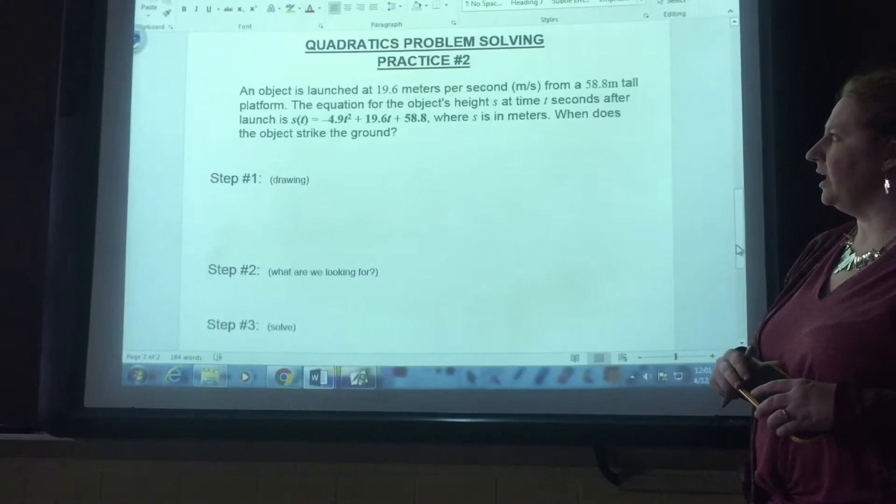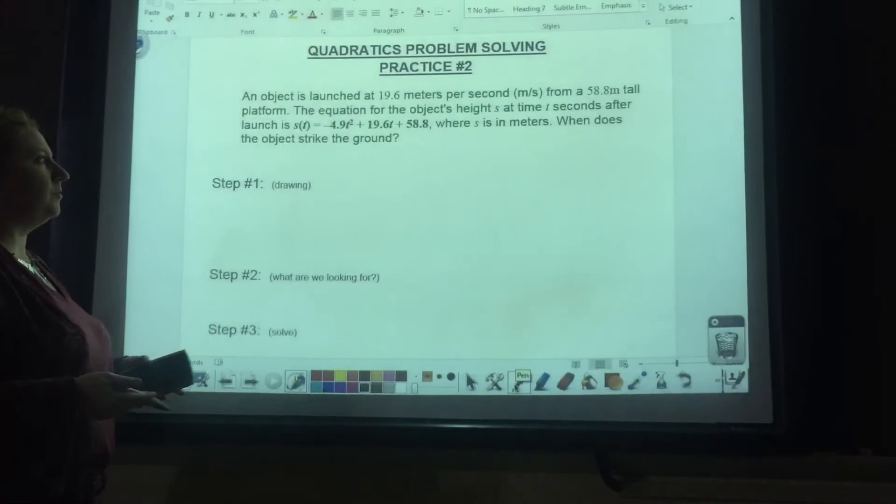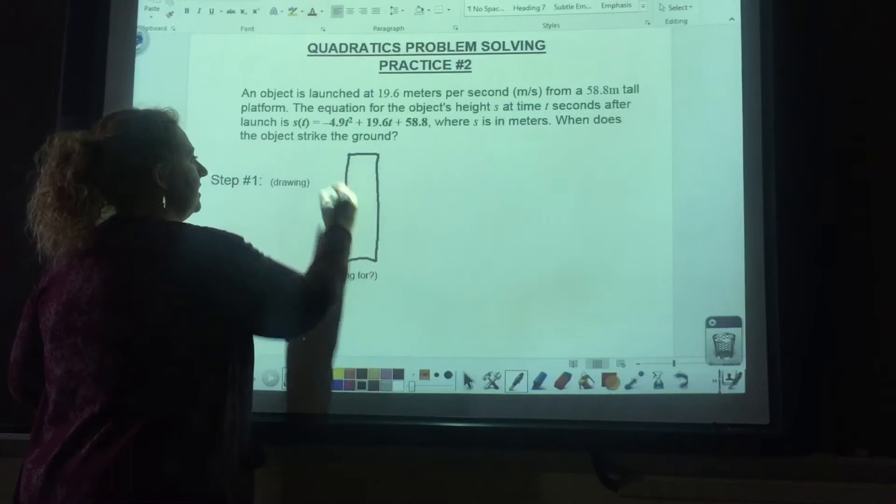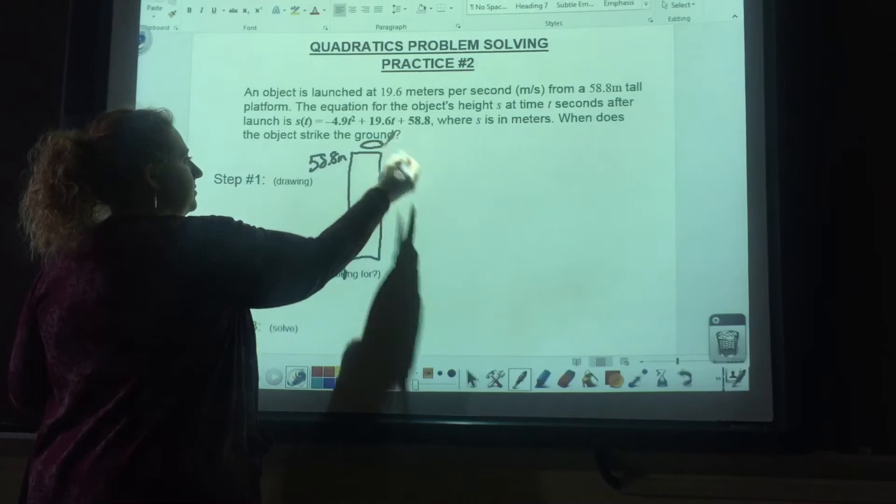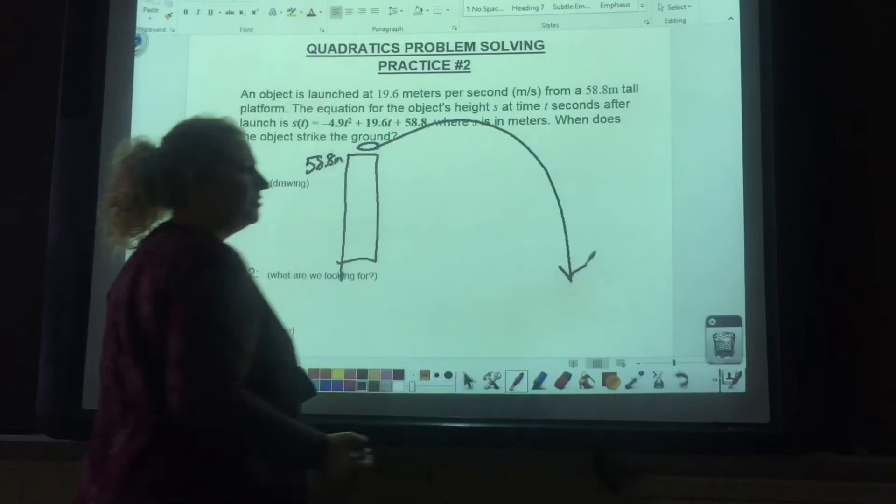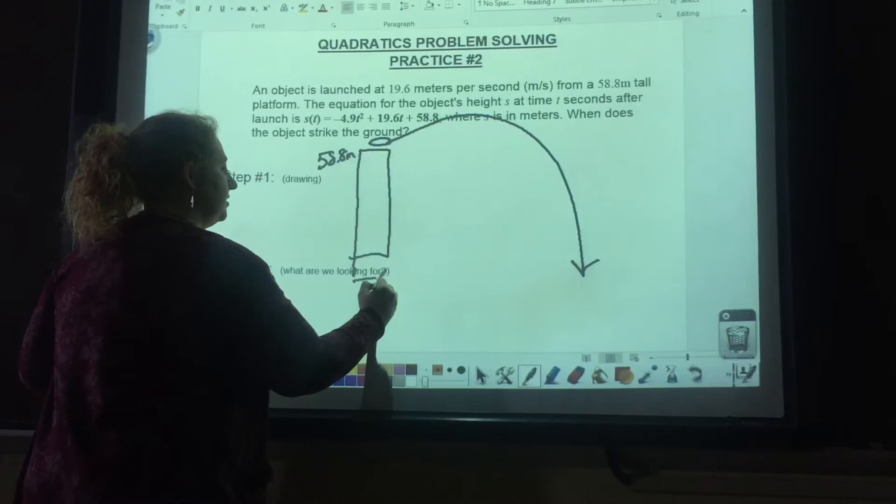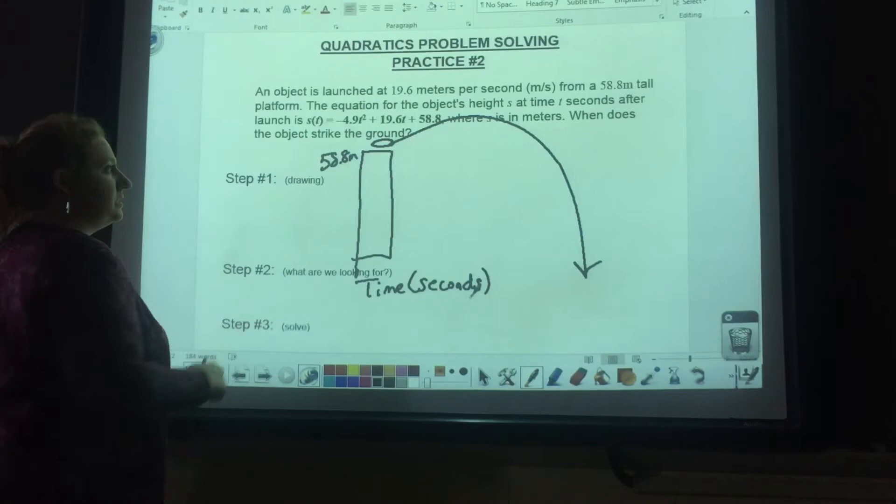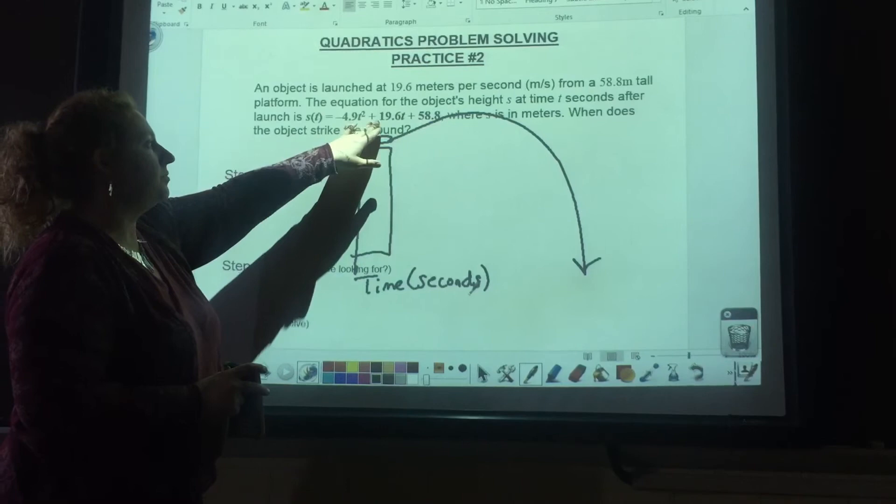They haven't given us any specifics. Like the last one we knew was a golf ball, but this time it's some type of object. We just know that it's on some type of platform that is 58.8 meters tall. Perhaps it's a football that's being tossed. That object is going to go up and land on the ground, very similar to the last picture. So all we need to know is how much time in seconds does it take for this object to land on the ground. When we get to step three, we are going to have S of T equals negative 4.9 T squared plus 19.6 T plus 58.8.